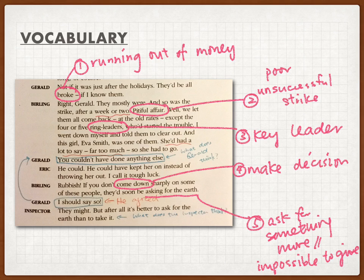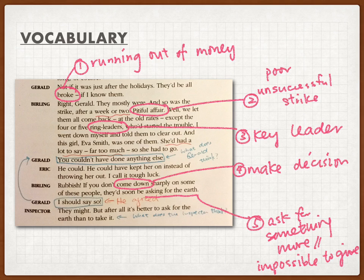Number three, 'ring leaders' — meaning the key leaders of the strike, the ones who started and initiated it. Number four, 'calm down' — here it means making a decision quickly. Mr. Burnley said when the workers didn't go to work, he needed to act sharply and make an immediate decision so he wouldn't lose so much money.